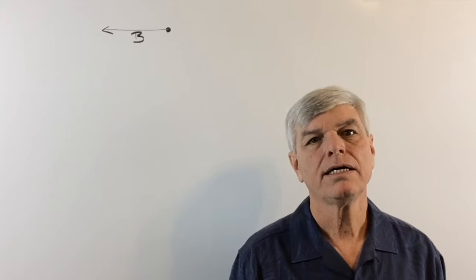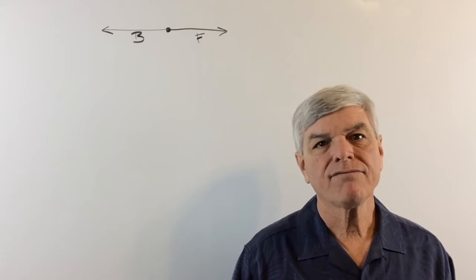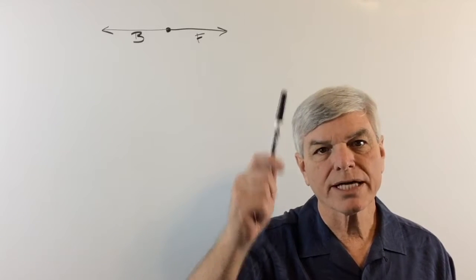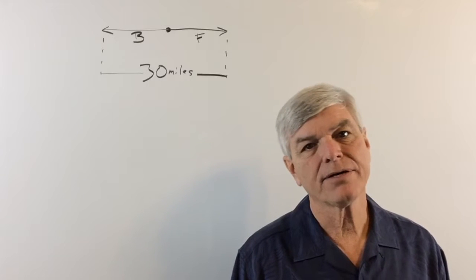Okay, I drew a dot on the board. This is where Bob and Fred are going to start. And Bob is going to go in that direction. And Fred is going to go in this direction. And after 3 hours, they are 30 miles apart.